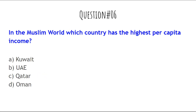The next question is: In the Muslim world, which country has the highest per capita income? The options are: Kuwait, UAE, Qatar, or Oman. The answer is Qatar — Qatar has the highest per capita income in the Muslim world.